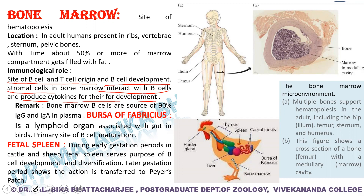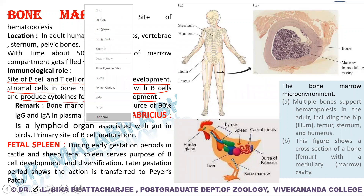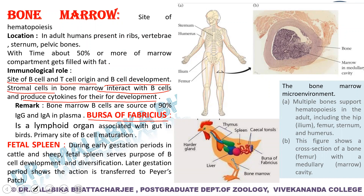The name 'B' of the B lymphocytes came from the fact that they were first discovered in the Bursa of Fabricius, a lymphoid organ associated with the gut in birds. It is the primary site of B cell maturation in birds. The T lymphocytes get their name from the thymus, because even though T lymphocytes originate in the bone marrow, their major maturation takes place in the thymus.